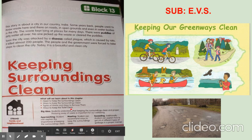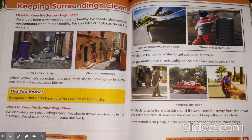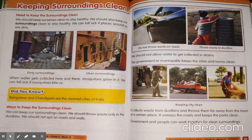Open your content book, page number 82 — Keeping Surroundings Clean. You keep yourself clean, your house clean, your room clean. In the same way, you have to keep your surroundings clean. This is a clean surrounding picture and this is a dirty surrounding picture. We should keep ourselves clean to stay healthy. In the same way, we should also keep our surroundings clean to stay healthy. If your house and your surroundings are clean, you will automatically be healthy.